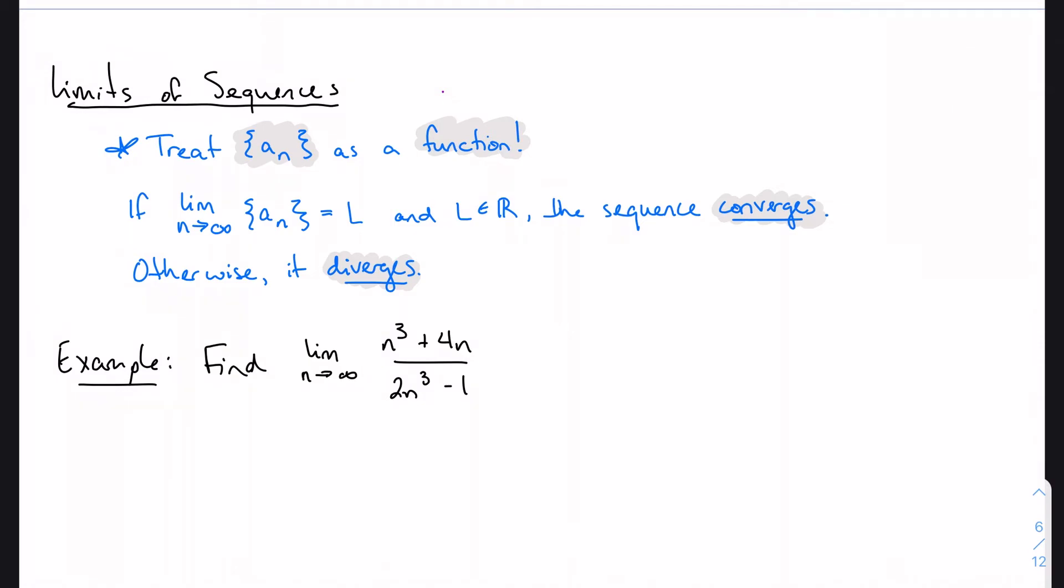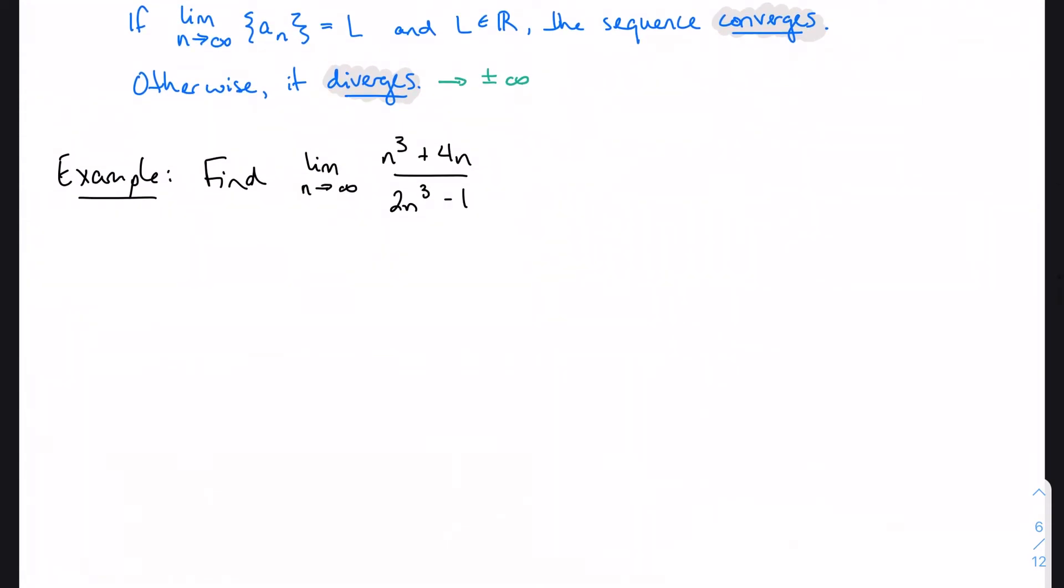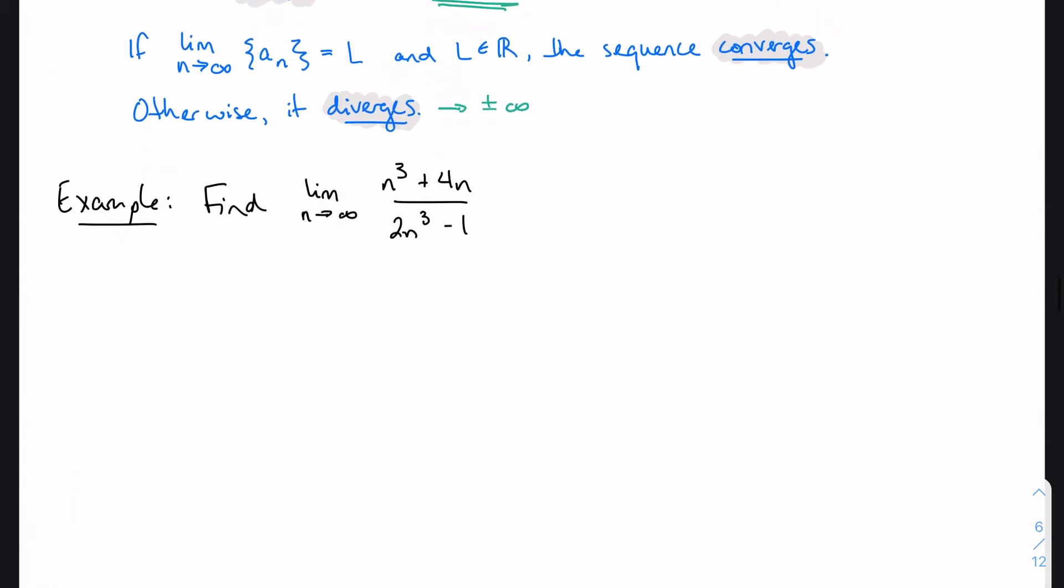So if we hit a number, it converges. If we tend toward either positive or negative infinity, it diverges. Simple as that. Treat it like a function. No need to freak out over the fact that it's a sequence now. Sequences are just functions. Treat them like functions. So then this problem is no different than anything we've just done. It's no different than the last one we just did.